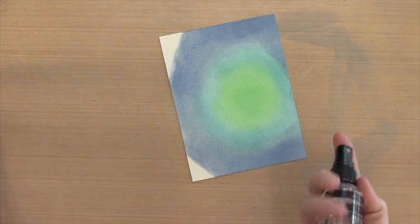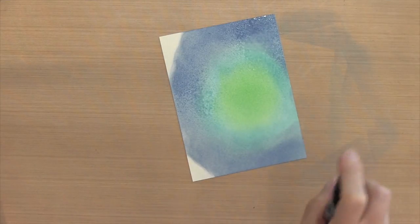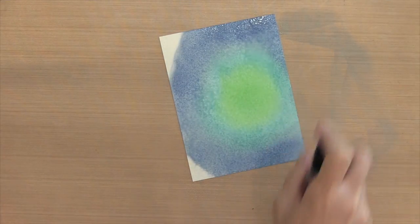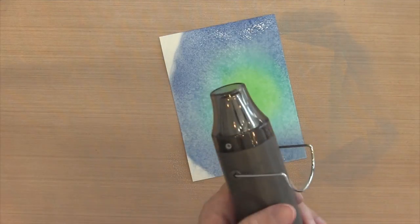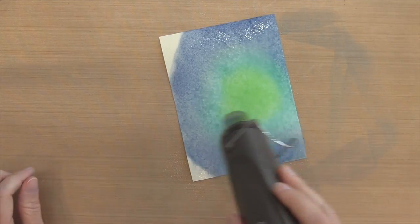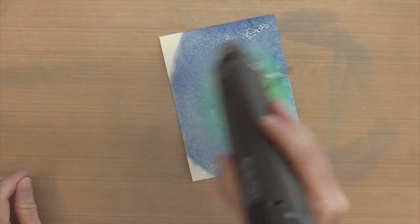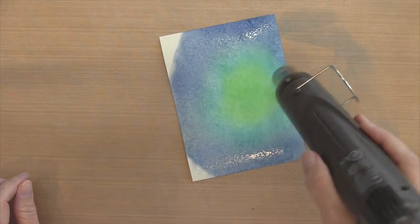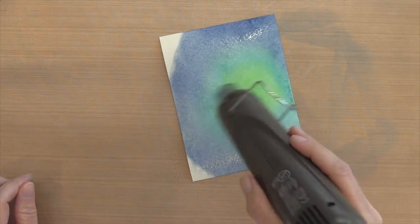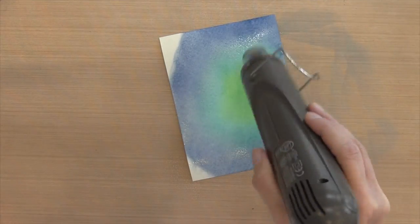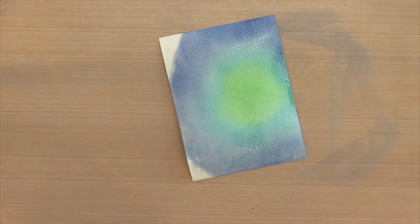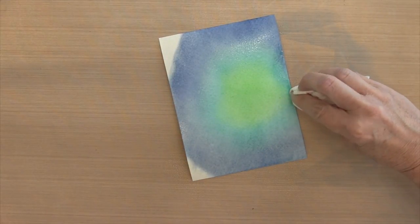Once I have my color laid down, I'm going to spritz it with some water. I don't want puddles because I'm not looking for a water stain look—I'm looking for a pretty smooth look. I'm going to heat it up. I like to use my heat tool with the oxide inks when I spray them because it moves the color around a little and it blends better.